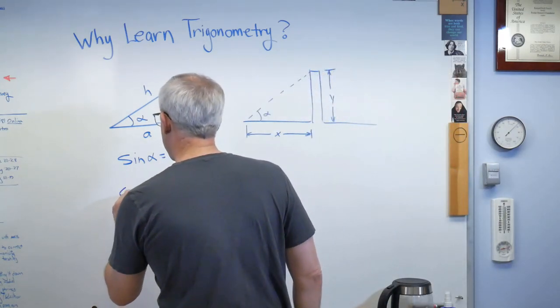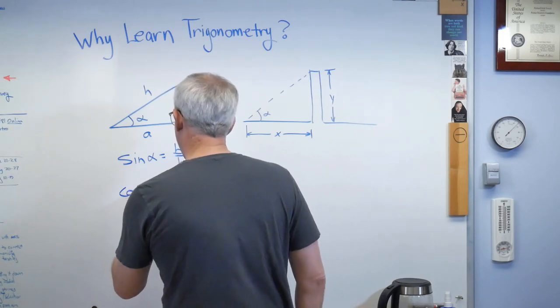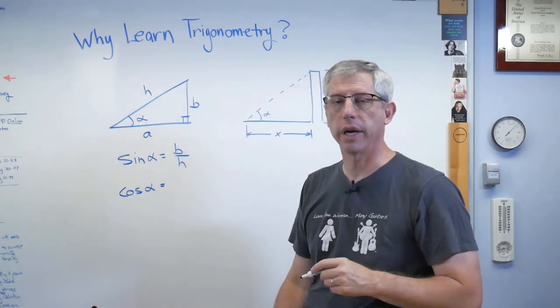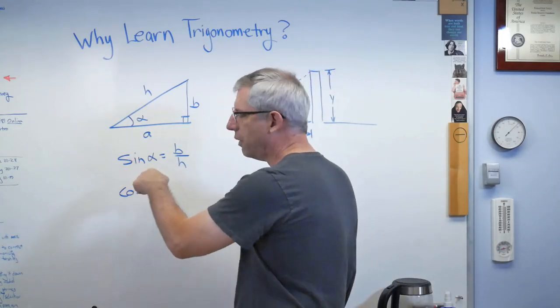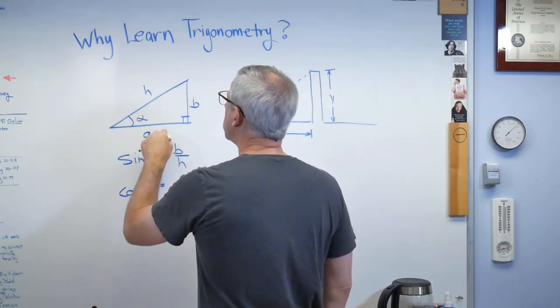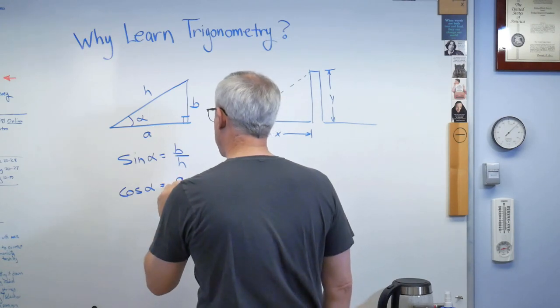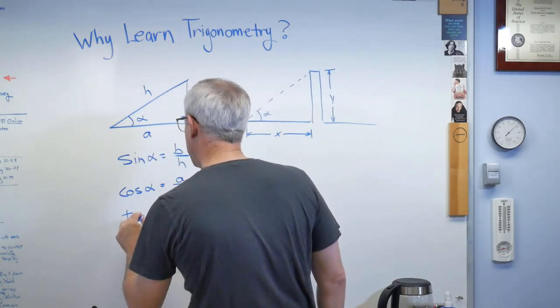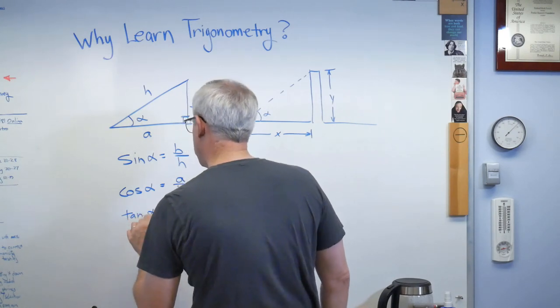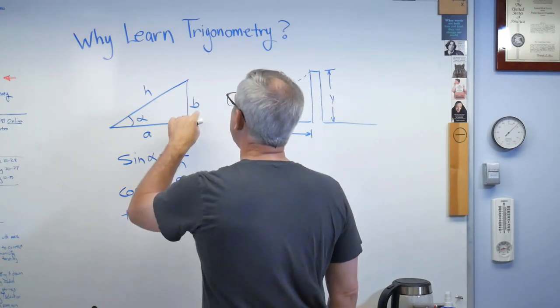So, the second of the functions we use is called cosine, C-O-S-I-N-E. It's usually shortened C-O-S. That's all those buttons on your calculators mean. So, this is adjacent over hypotenuse, so that's A over H. And then the last one is tangent, T-A-N-G-E-N-T, and we just shorten it to T-A-N, and that's B over A.